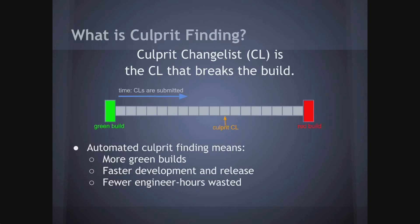We want to find the culprit because we want to have more green builds, which means better quality software, a faster development and release cycle, and fewer engineer hours wasted. When you have a setup like this, developers typically take shifts watching the build. If the build fails, whoever is on watch stops what they're doing and starts investigating what might have caused the breakage. We should have an automated way to solve this problem.